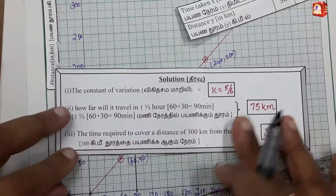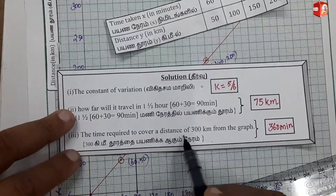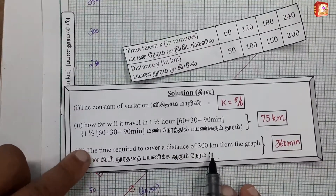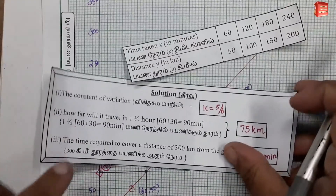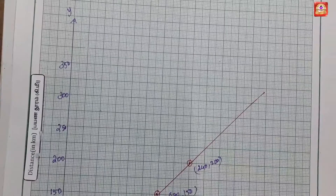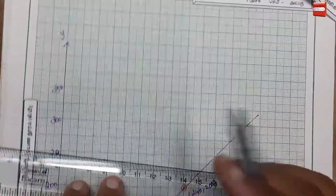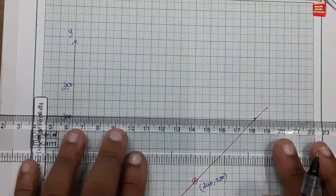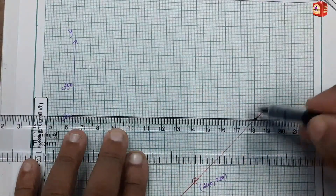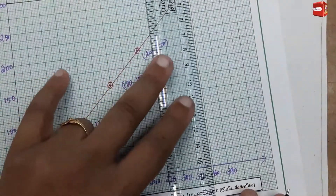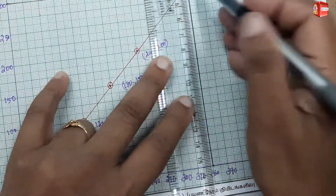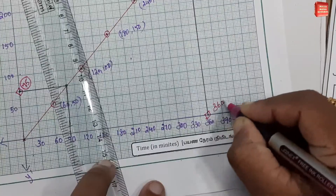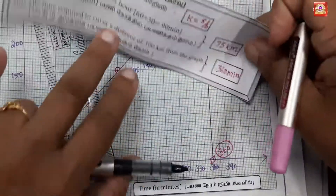Third option: the time required to cover a distance of 300 km. Mark 300 on the Y axis, then drop to the corresponding X axis value. The answer is 360 minutes.